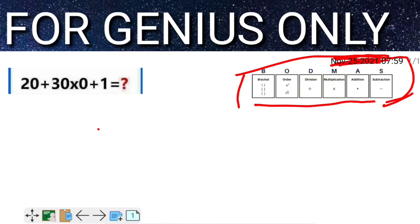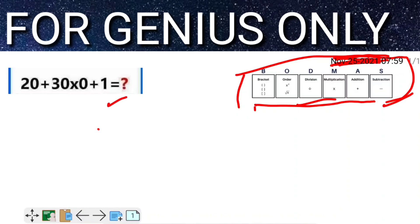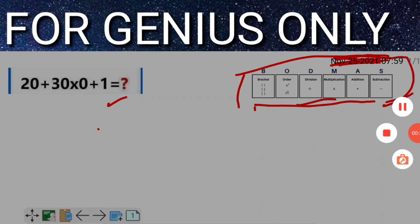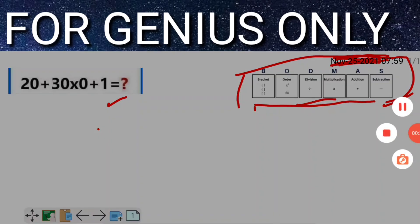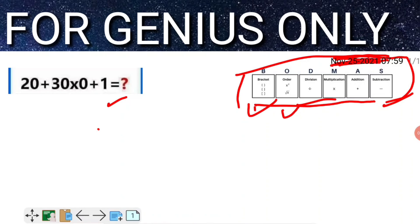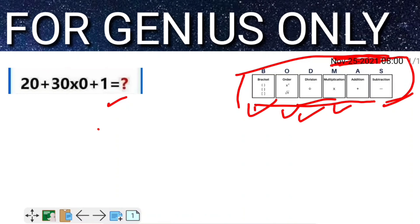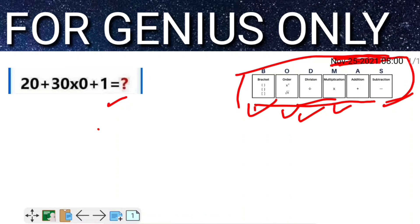Now friends, watch what we have to follow. First, if brackets are available, we follow that first according to BODMAS rule. After that, orders and squares, after that multiplication.